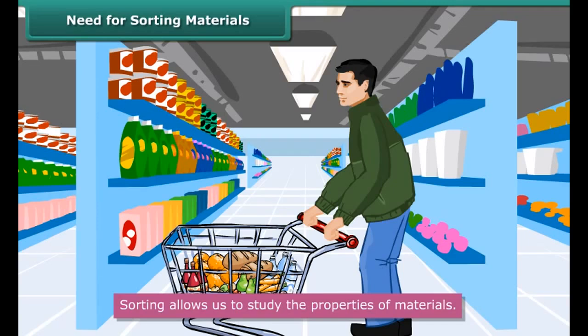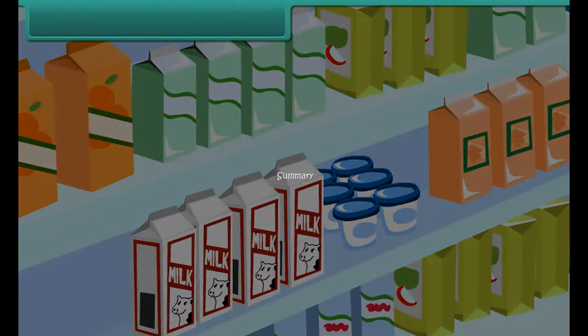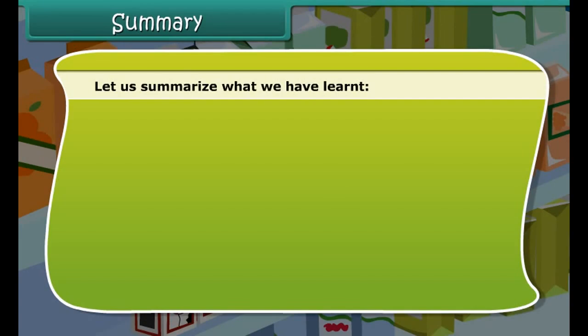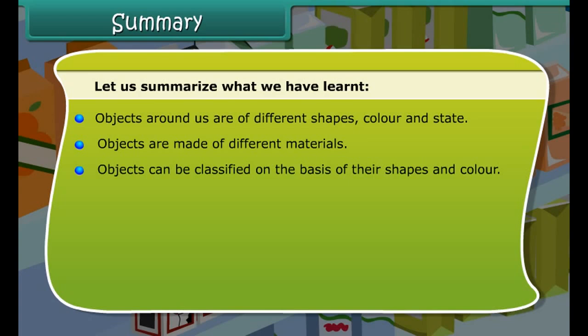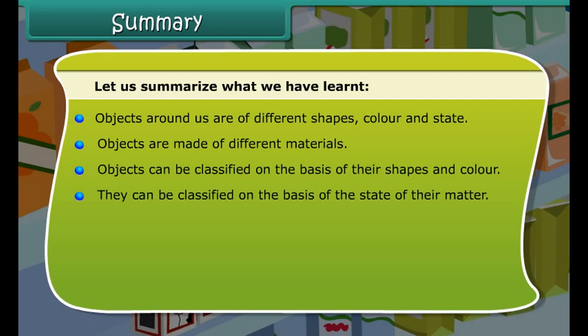We have been looking at the different bases for classifying objects and materials. Have you wondered why such classification is important? In our everyday life we come across many materials. Sorting materials into groups plays an important role because it is easy to locate similar objects by placing them together. Sorting materials into groups also facilitates study of their properties and allows us to observe patterns in their behavior.